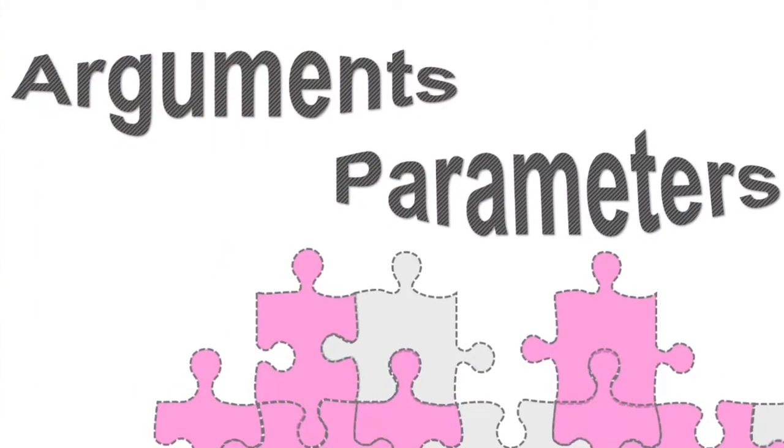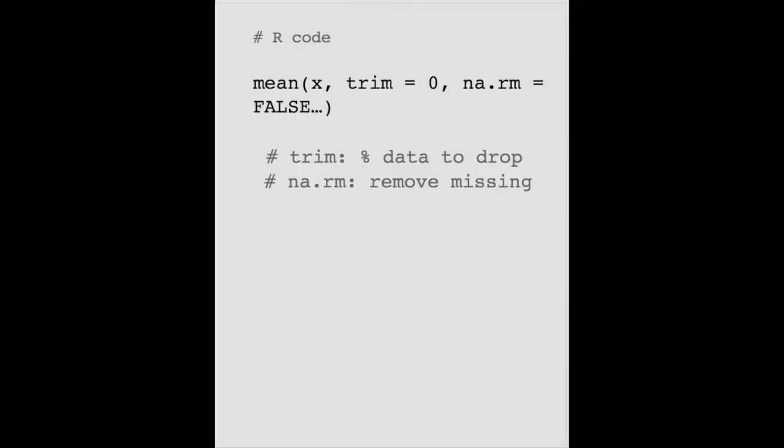If you're not sure about the input and output restrictions, you must look up the help. Most functions have parameters or arguments. These arguments modify the behavior of the function. For example, the R function for mean has the following spec: mean(x, trim = 0, na.rm = FALSE, ...). Here, trim and na.rm are arguments.